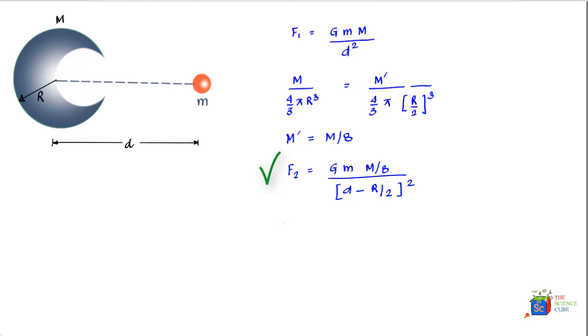So we'll go ahead and subtract F2 from F1, and the net gravitational force would therefore equal G M M upon D square minus G M M upon 8 divided by D minus R by 2 whole square.